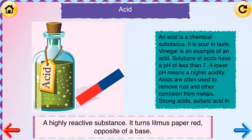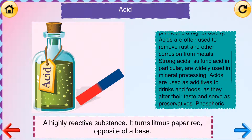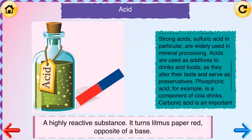Acids are often used to remove rust and other corrosions from metals. Strong acids, sulfuric acid in particular, are widely used in mineral processing. Acids are used as additives to drinks and foods as they alter their taste and serve as preservatives.